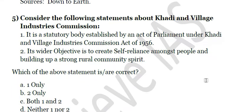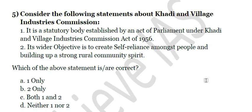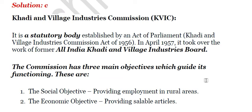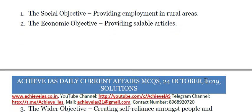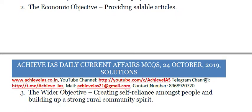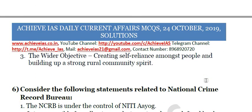Next, consider the following statements about Khadi and Village Industries Commission. First, it is a statutory body established by an act of parliament under the Khadi and Village Industries Commission Act of 1956. Second, its wider objective is to create self-reliance amongst people and build up a strong rural community spirit. Both statements are correct. KVIC was set up in 1956, and in 1957 it took over the work of the former All India Khadi and Village Industries Board. Its three main objectives are: social — providing employment in rural areas; economic — providing saleable articles; and wider — creating self-reliance and building a strong rural community spirit.